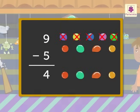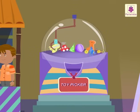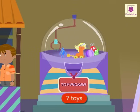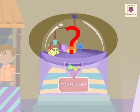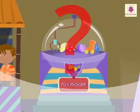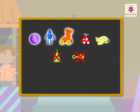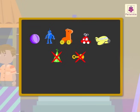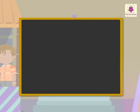Look, there's a toy picker! Let's pick up some toys. There are seven toys in the toy picker. We picked up two toys. How many toys are left? There were seven toys — let's cross out two for the toys that were picked. Now let's count the toys left: one, two, three, four, five. There are five toys left in the toy picker.